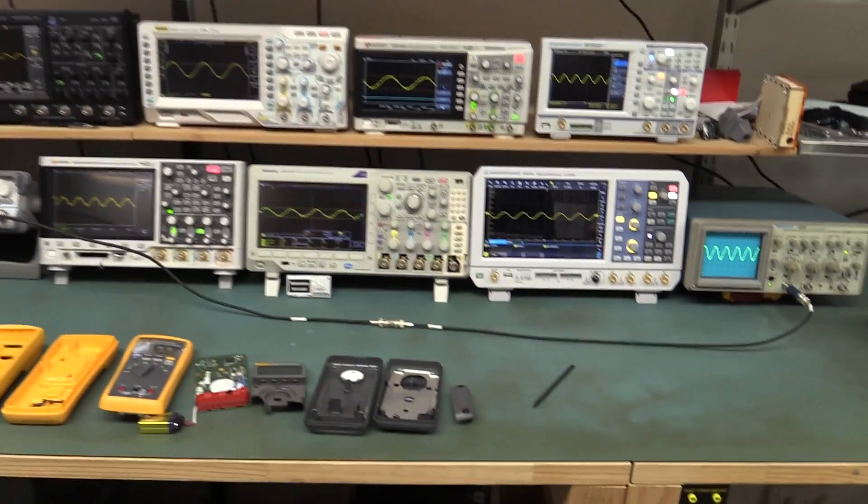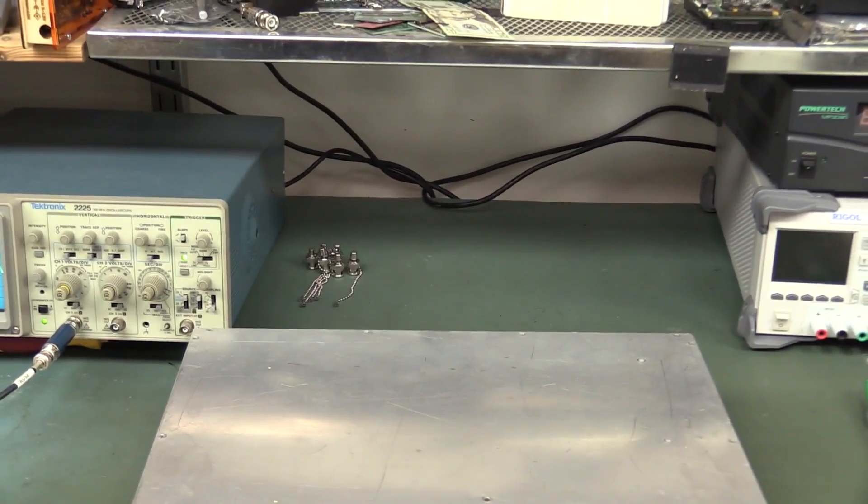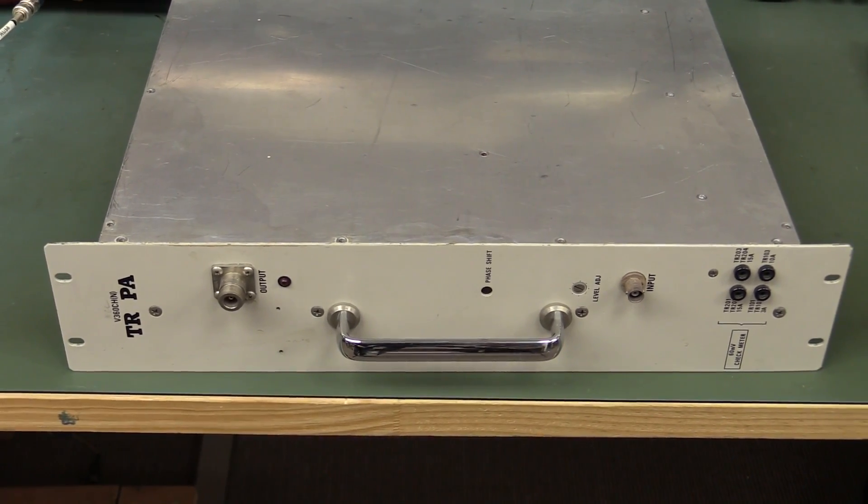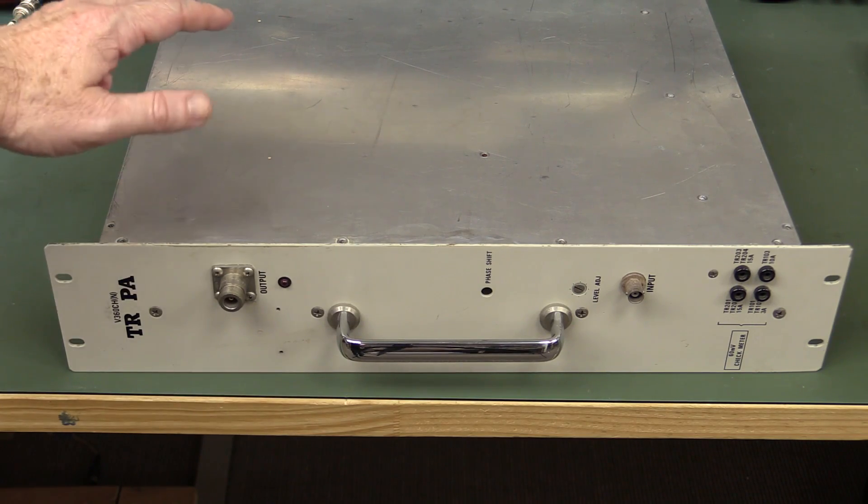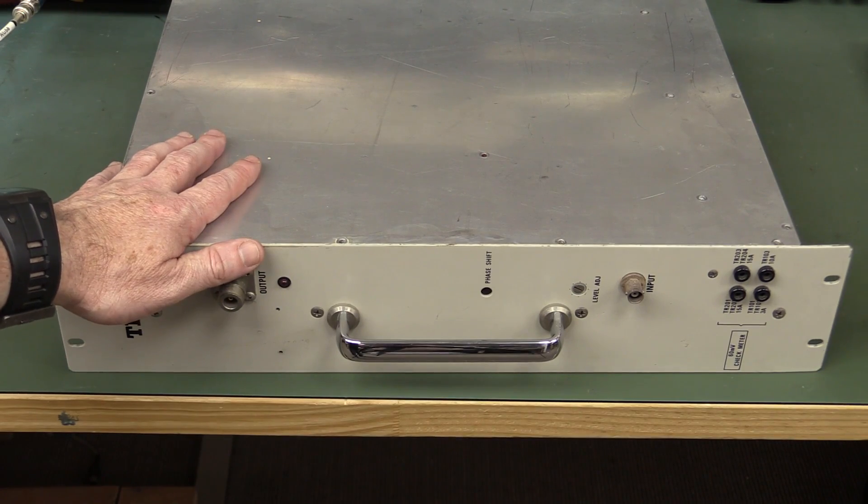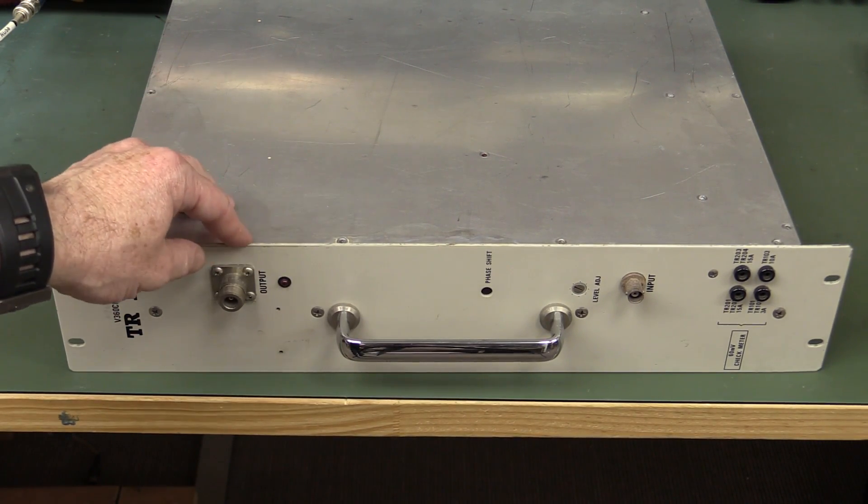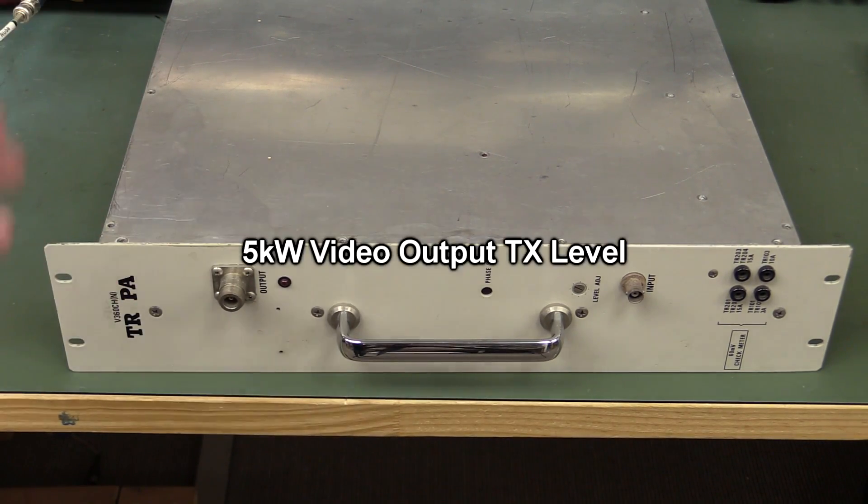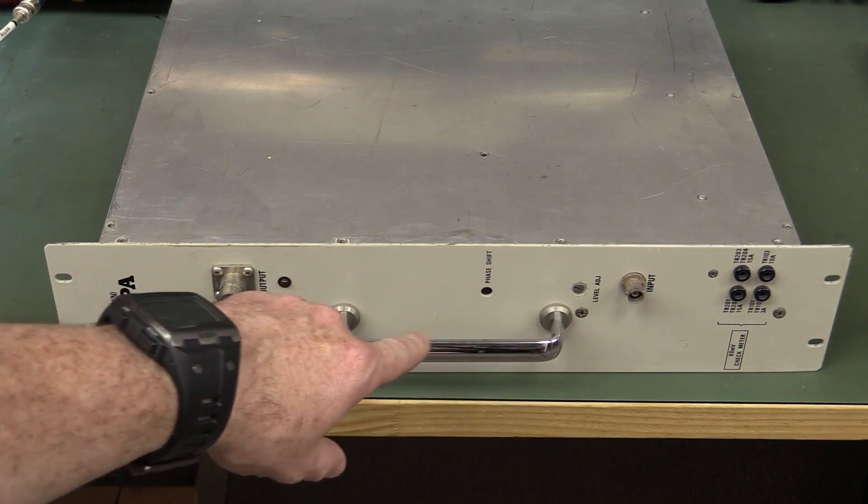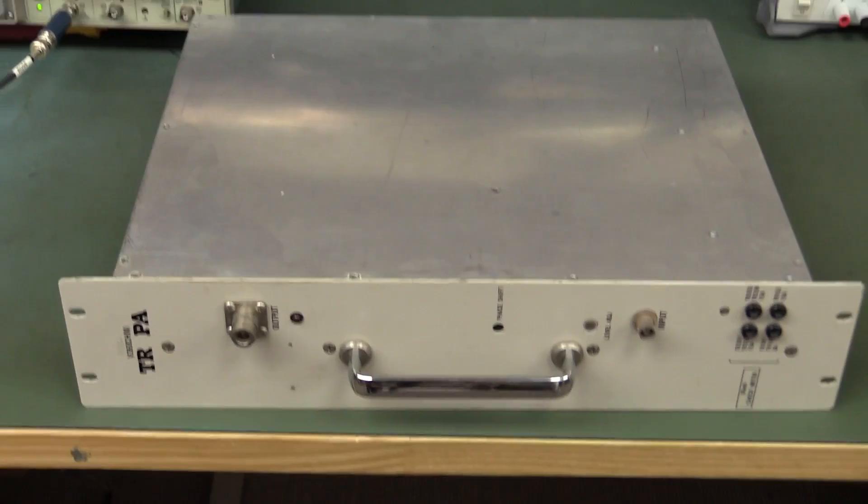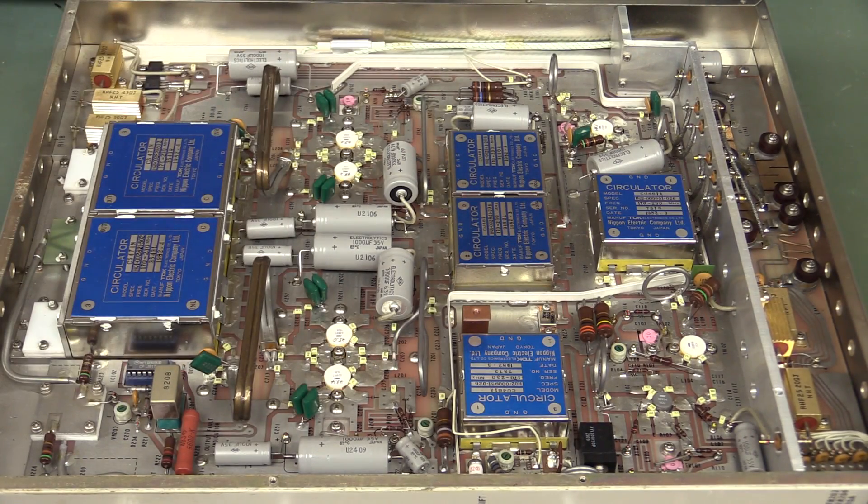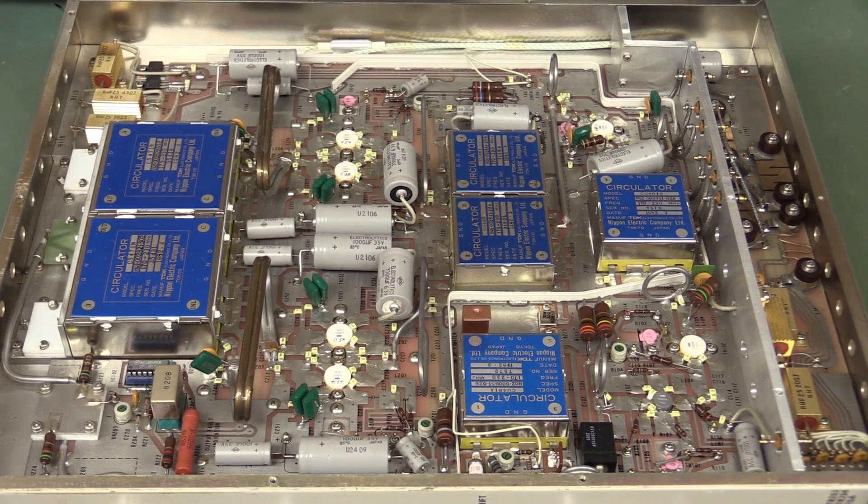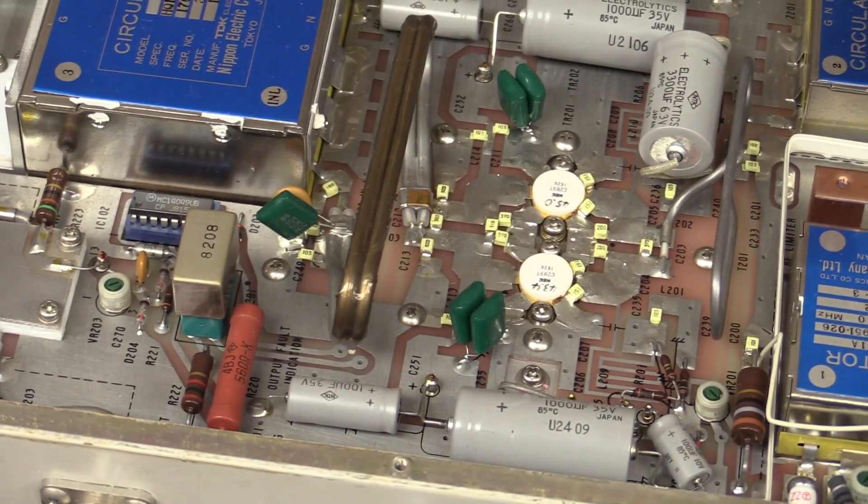Now, everyone loves teardowns on the EEVblog. I've got something special. You might have seen this on a previous video where I did the Channel 7 TV transmitter teardown. This is the 300-watt amplifier that transmitted the analog TV signal in Sydney for about 20 years. This was the pre-amplifier, a 300-watt pre-amplifier for the video signal. The audio went out at 300 watts. The video went out at several hundred kilowatts. Let's take a look inside this baby. The RF aficionados are wetting their pants right now.